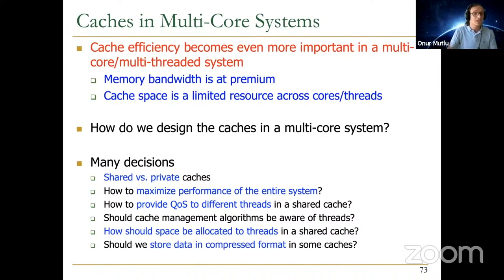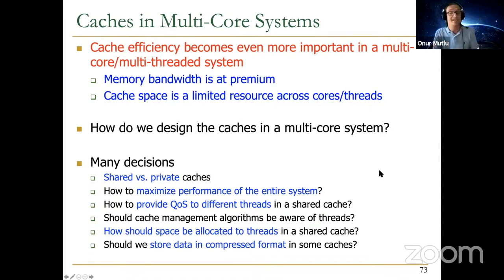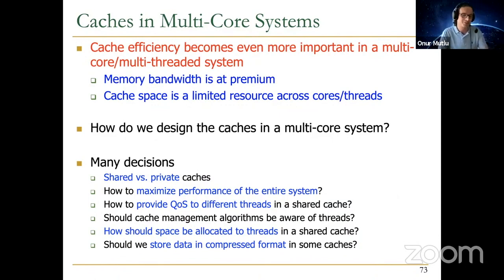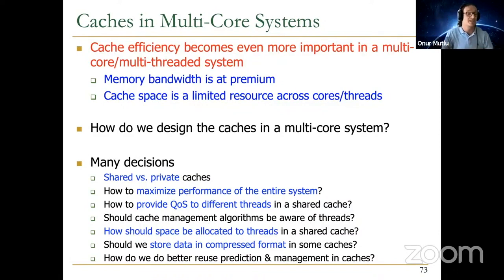There's another interesting dimension: since efficiency is so important, should we consider storing data in a compressed format in some caches so that we can make better use of the available space? Of course there are downsides — whenever you access the cache, you need to decompress the data. And how do we do better use prediction and management in caches? This is much more important in a multi-core system because you have many more threads requiring service from the memory hierarchy.